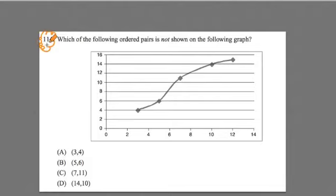It's a good problem to review some basic skills with algebra and algebraic graphing. Alright, so here it goes. Which of the following ordered pairs is not shown on the graph? And it gives us a graph, and it gives us a whole bunch of ordered pairs.